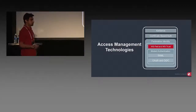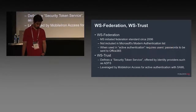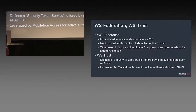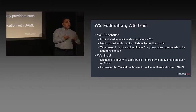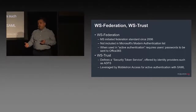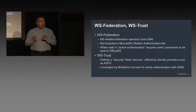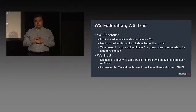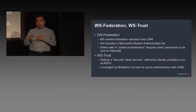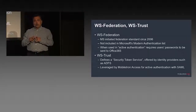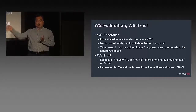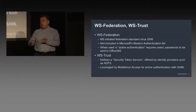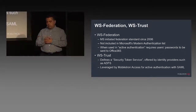Federated identity is a mechanism where a service provider relies on an identity provider to authenticate the user using a standard protocol. WS-Federation and WS-Trust are protocols typically used in the Microsoft world. WS-Federation is a somewhat older protocol used by Microsoft to authenticate the user in the active authentication case to an identity provider. Office 365 reaches out over either WS-Federation or WS-Trust to the identity provider.